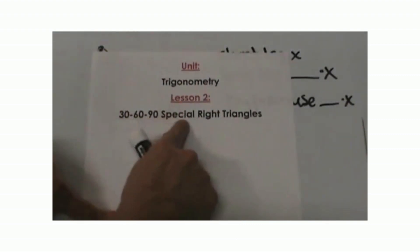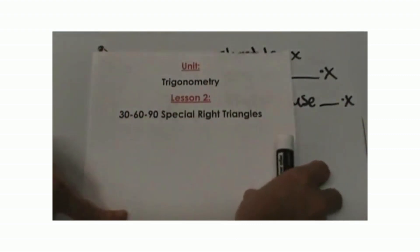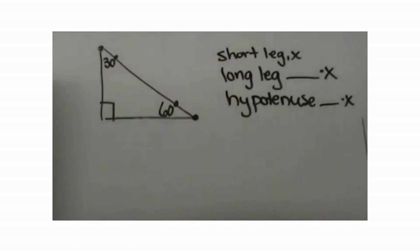30-60-90s are special right triangles because they have a pattern to solve for the sides.